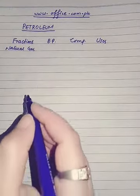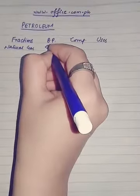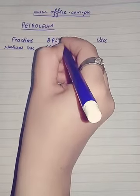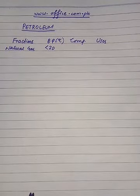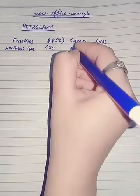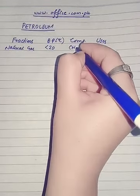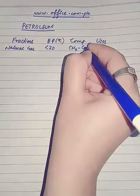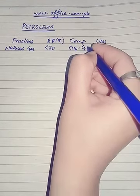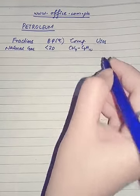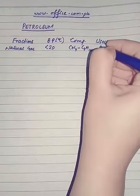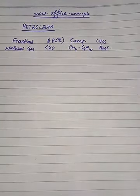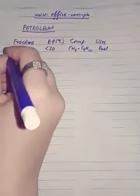Natural gas has a boiling point of less than 20 degrees centigrade, and its composition is mostly methane. It is composed of carbon 1 to carbon 4 compounds, and it is mostly used as fuel and for various other petrochemicals.